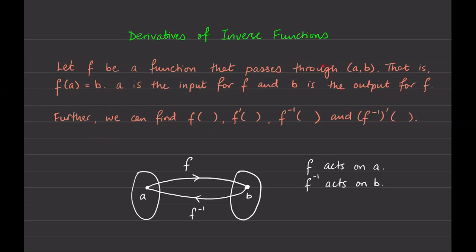Now from this information — just from saying that f is a function and that it passes through (a, b) — we should be able to figure out a couple of things. We should be able to find f of something, and that something is either a or b. Pause the video and fill in these blanks. Think about what you would plug into f, f prime, f inverse, and f inverse prime.